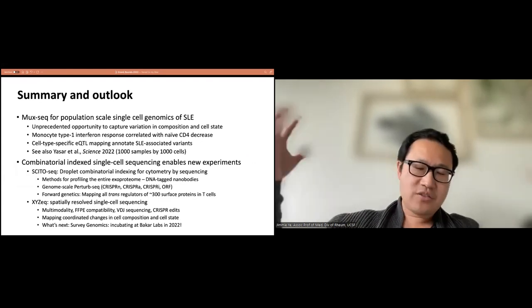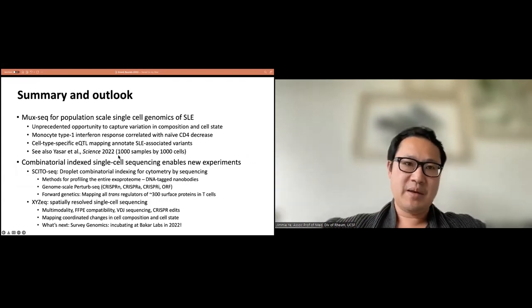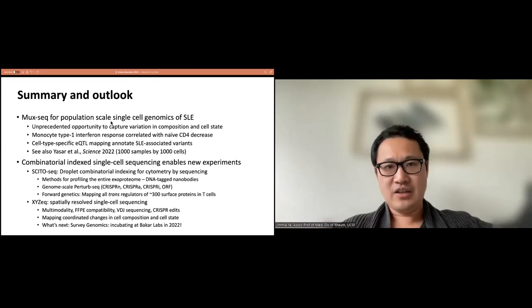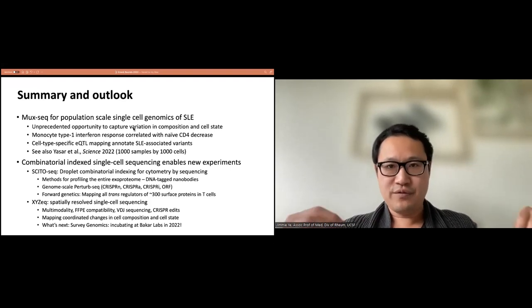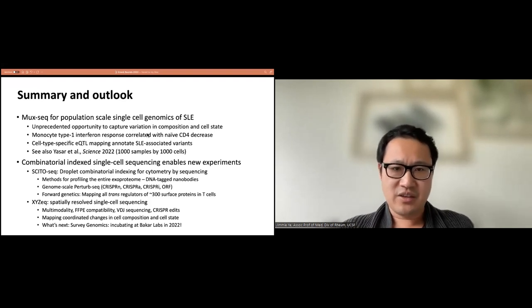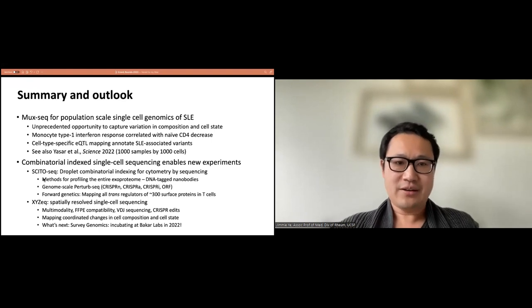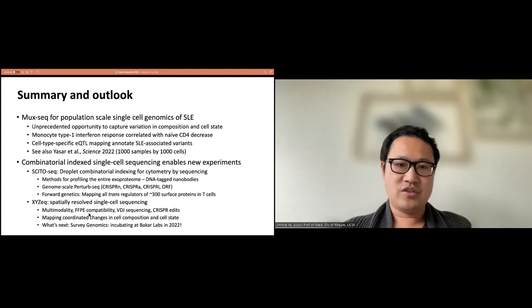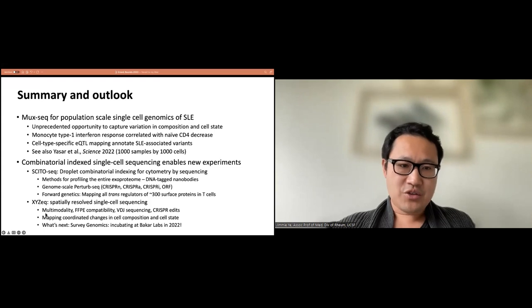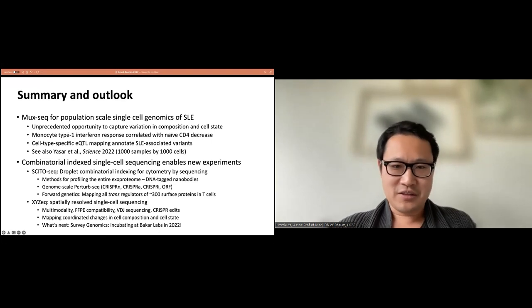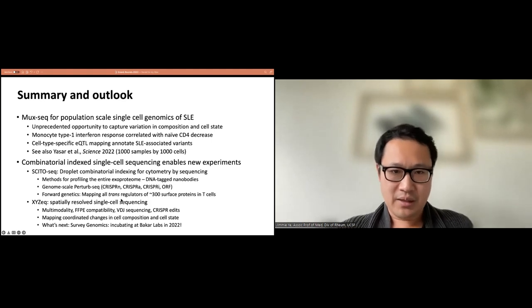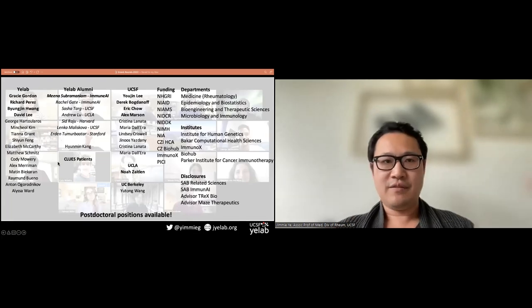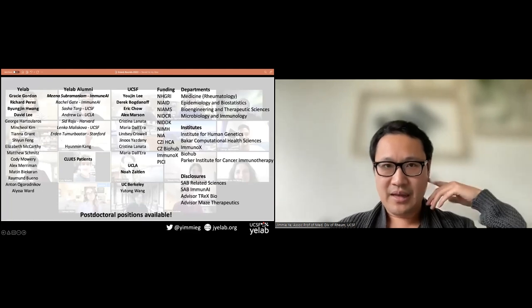To summarize, this is a really exciting time in single cell and spatial genomics in terms of both technology development and applications to ask brand new questions. I showed MUX-Seq, using sample multiplexing to power population-scale single cell sequencing. This is an unprecedented opportunity to capture variation in composition as well as cell states. I showed two examples of new emerging technologies. CytoSeq will allow us to do these forward genetic screens at much higher throughput. XYZ is a really exciting technology to start studying coordinated changes in cell composition and cell state. I'll just leave my acknowledgments up.